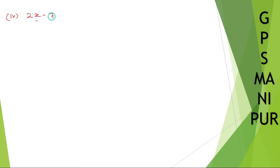Roman number 4: x minus 7. Here we have only one variable which is x. The power of x is 1, so degree is 1.